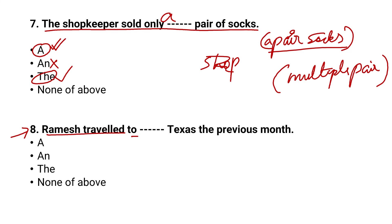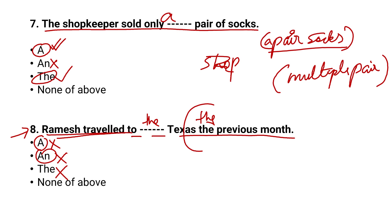The eighth question: 'Ramesh traveled to dash Texas the previous month.' While we typically use the definite article 'the' with place names, 'a Texas' does not work, and 'the Texas the previous month' also sounds wrong. Therefore, none of the above is the correct option.